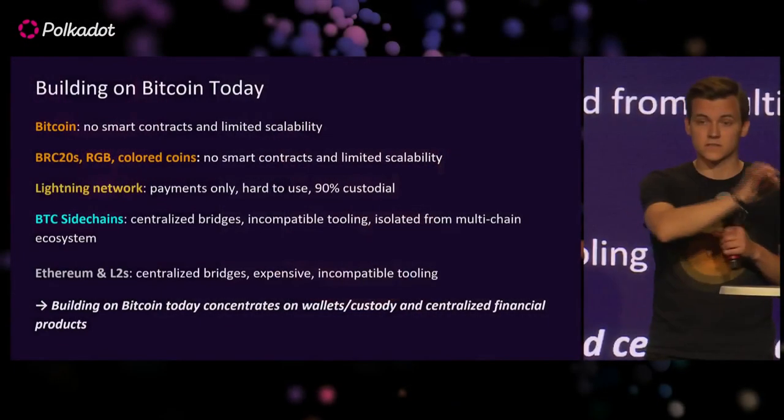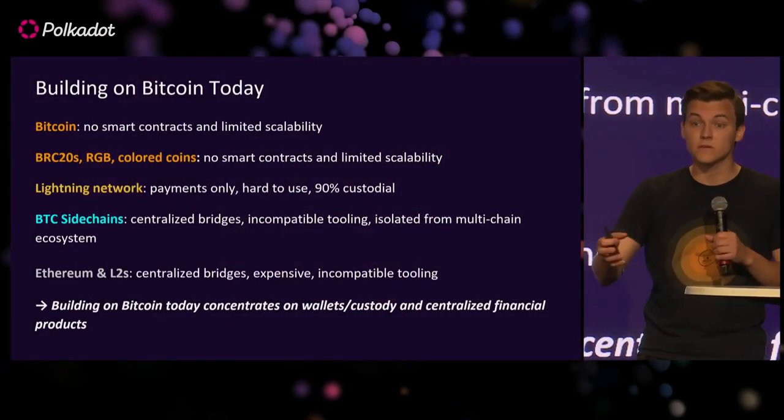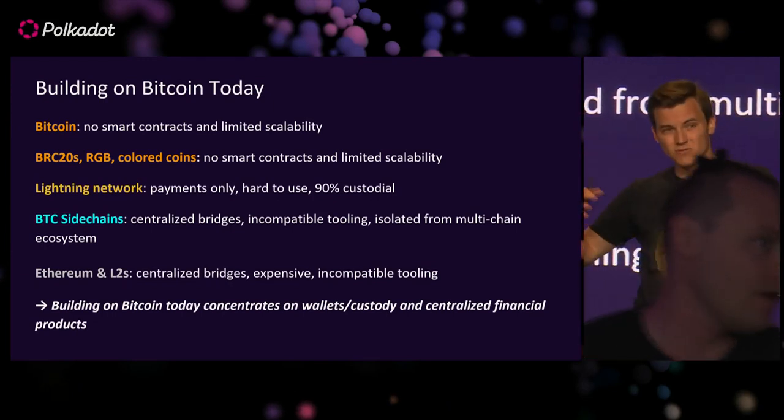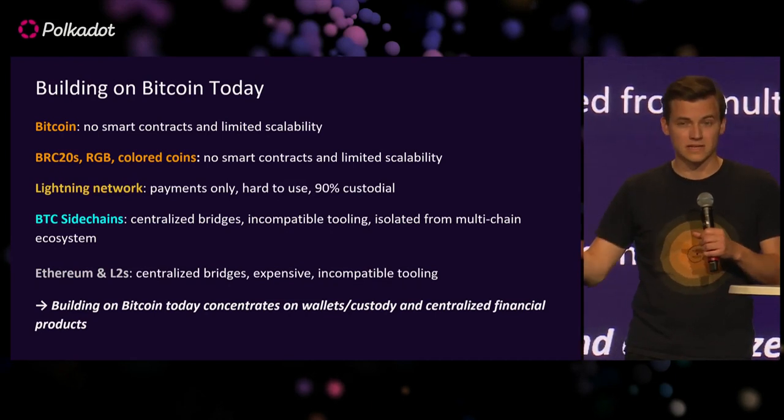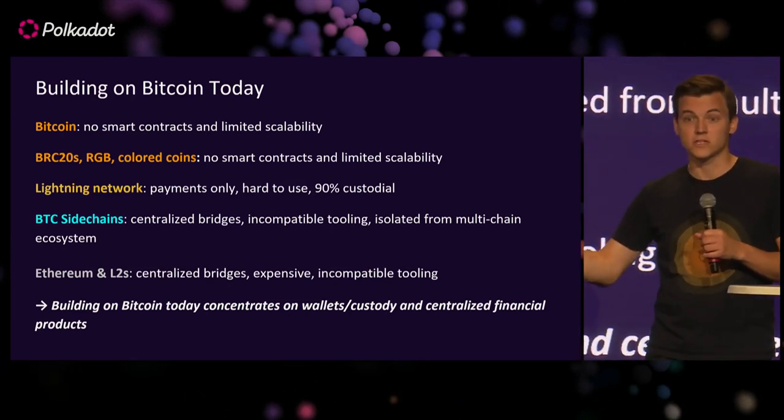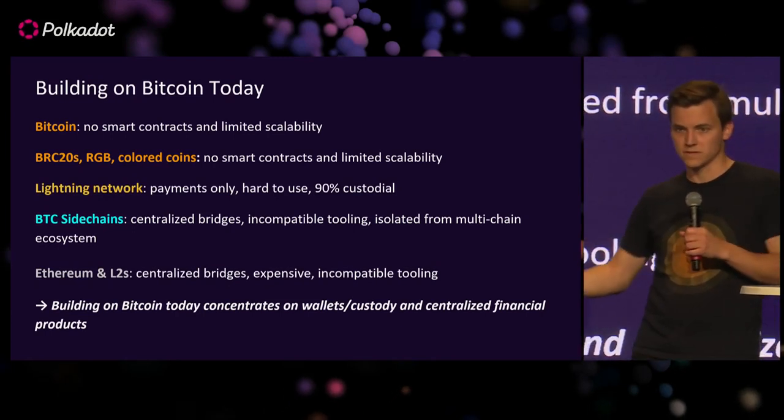Lightning is a well-known solution towards scaling. It tries to process transactions off-chain, make them instant, and get people to make fast payments with Bitcoin. But it only supports payments and is quite hard to use. If you really want to use Lightning in a trustless manner, you need to understand revocation transactions, you need to be online, and only around 5,000 Bitcoin is locked in Lightning.